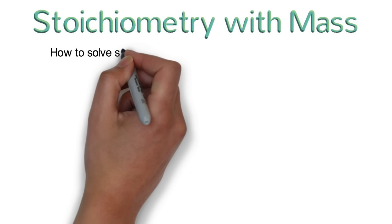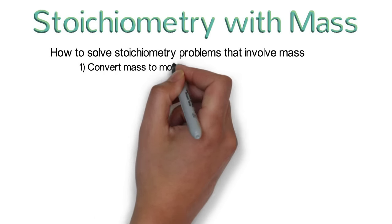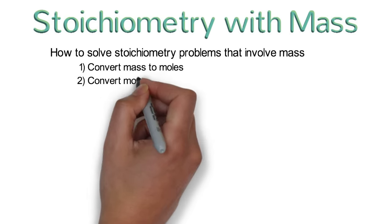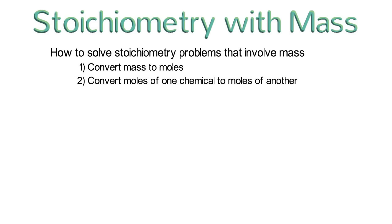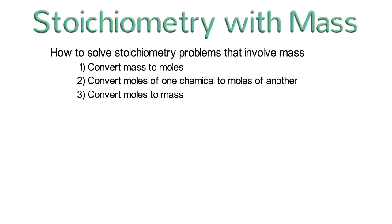Welcome to Stoichiometry with Mass, brought to you by Ketsbook. In this video, we are going to learn how to solve stoichiometry problems that involve mass. When the amounts of reactants or products are quoted in grams or some other mass units, the stoichiometry problem becomes more complex because you will need to first convert the mass to moles. Then you can convert from moles of one chemical to moles of another chemical. Last, you may need to convert from moles back to mass. These three steps are necessary because you must be in moles in order to convert from one chemical to another.